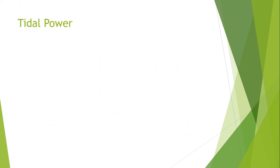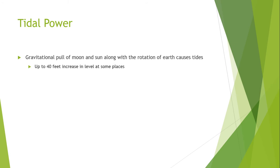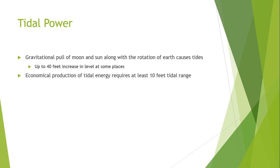Now I will discuss about tidal power. Tides are believed to occur due to the gravitational pull of the moon and sun, as well as the centrifugal forces associated with the rotation of the Earth. Tides can go up to 40 feet above sea level in some places. Economical production of tidal energy requires at least 10 feet of tidal range.